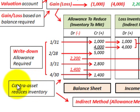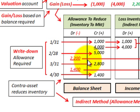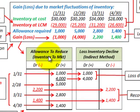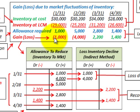The allowance is a contra-asset account to our inventory on the balance sheet, and it reduces our inventory. On the income statement, we recognize a loss for inventory decline in conjunction with writing down the inventory. Let's calculate this allowance to see what we need to reduce our inventory to market. The difficult part is calculating any gain or loss, and we'll use a T-account form for that.